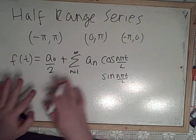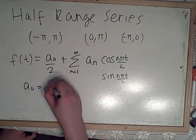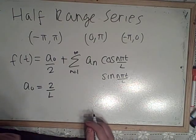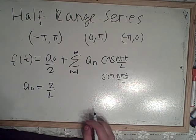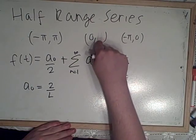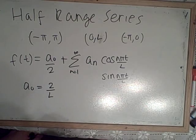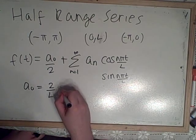Now, we need to define the different parts in here. a nought is equal to 2 over l. Now, what I'm saying with the l is, if I was to make it a bit simpler... that should make more sense.